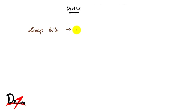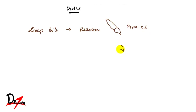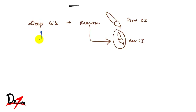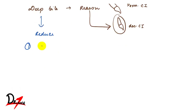In deciduous dentition we find a deep bite. The reason is that our deciduous incisors are more upright compared to permanent ones. If I draw a deciduous central incisor versus a permanent central incisor, you can see the deciduous one is more upright. That is why we have a deep bite in the deciduous dentition. Later in development this deep bite will reduce — one reason is the deciduous molars erupting.